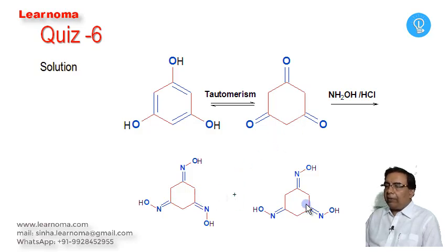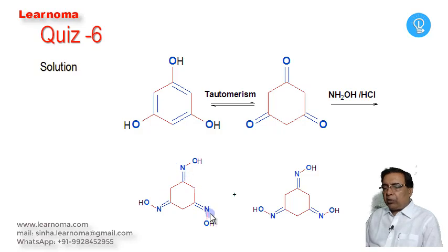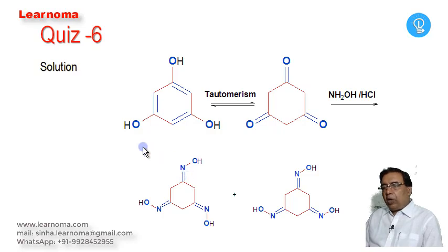You know that oximes exhibit geometrical isomerism, and here we have three geometrical units. But this problem cannot be solved by formula — the logic is that it is not a molecule in which two sides are equal.